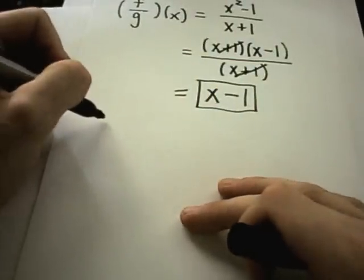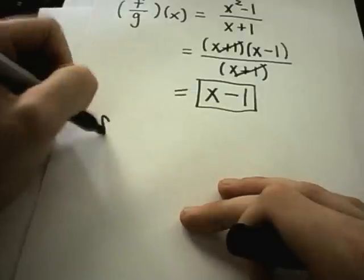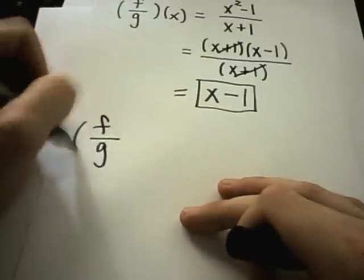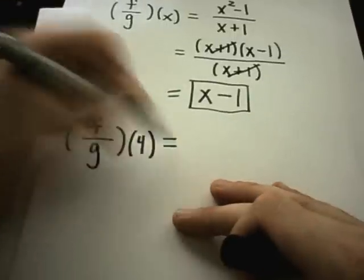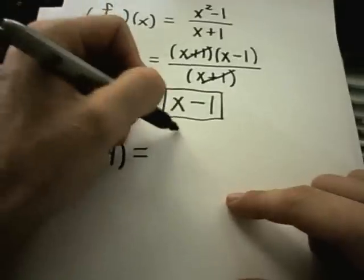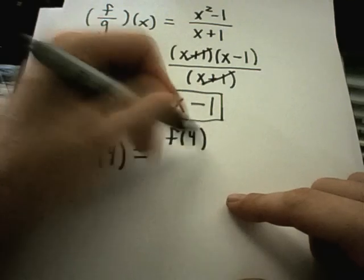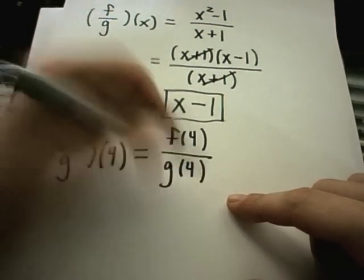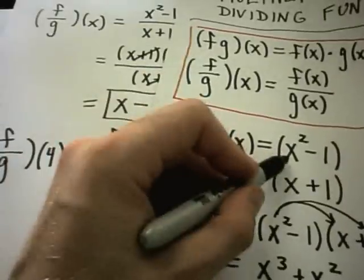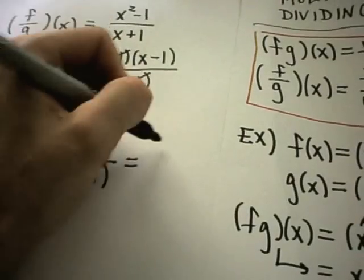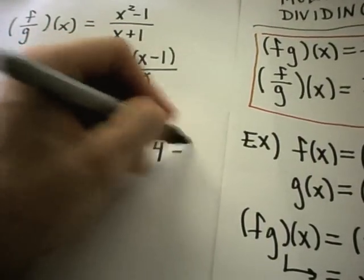So also, if they said, for example, find f divided by g of 4, again, all that means is you can take f of 4 divided by g of 4. And if you plug 4 back into the original function, I'll get 4 squared minus 1.